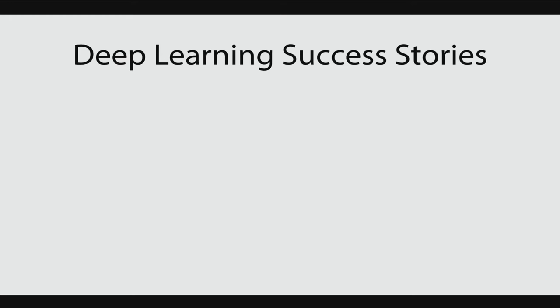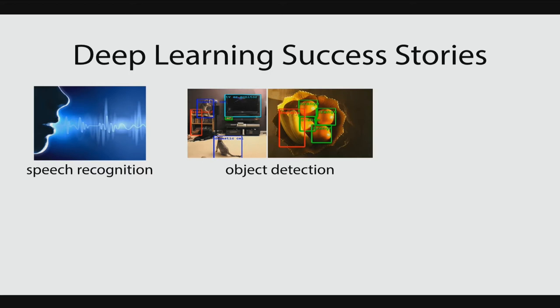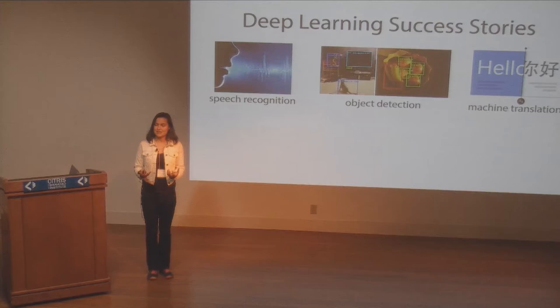Thanks for the introduction, Ken. Today I'll be talking about learning through interaction, and specifically generalization in robot reinforcement learning. But before I talk about generalization, first I'm going to talk about deep learning. There have been a number of success stories in deep learning — speech recognition, image recognition, and machine translation, just to name a few. People are so excited about these methods because they work.